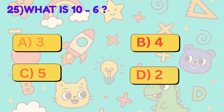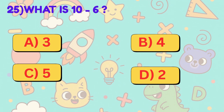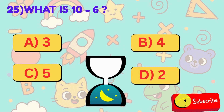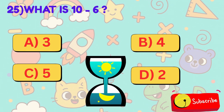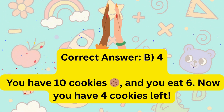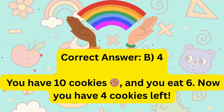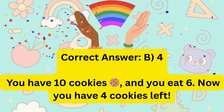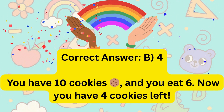25. What is 10 minus 6? Is it A, 3, B, 4, C, 5, or D, 2? Correct answer is B, 4. You have 10 cookies and you eat 6. Now you have 4 cookies left.